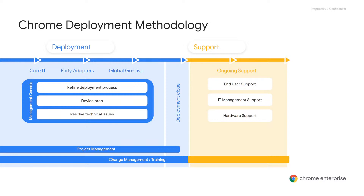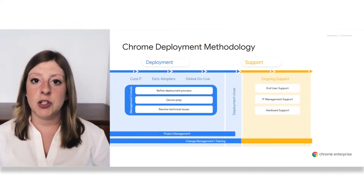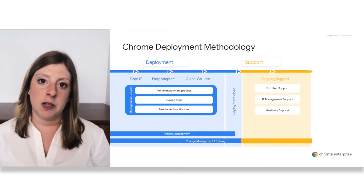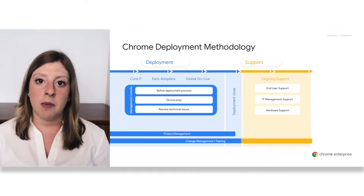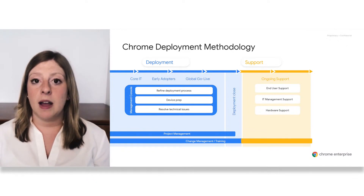As the Chrome deployment comes to an end, you'll have that transition period. After the deployment is done, you'll decide as a team and with your account team what that ongoing support will look like — everything from end user support to IT management support as well as hardware support. Those are the three key factors when looking at what that ongoing support will look like, and we want to ensure that even after the deployment you're getting the necessary support from Chrome.